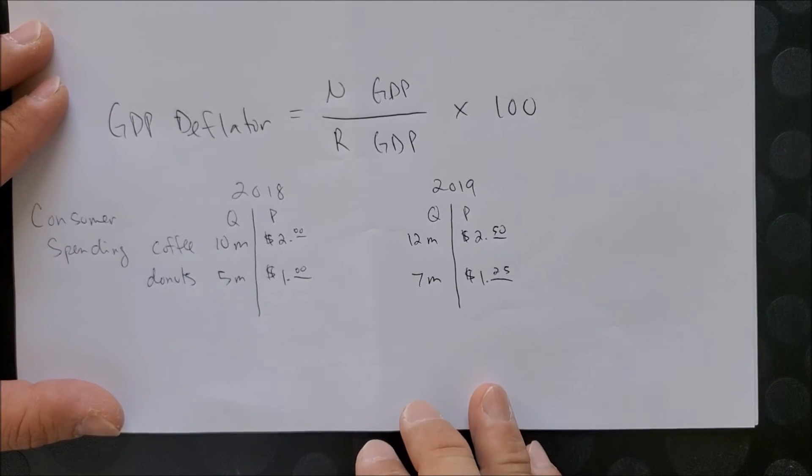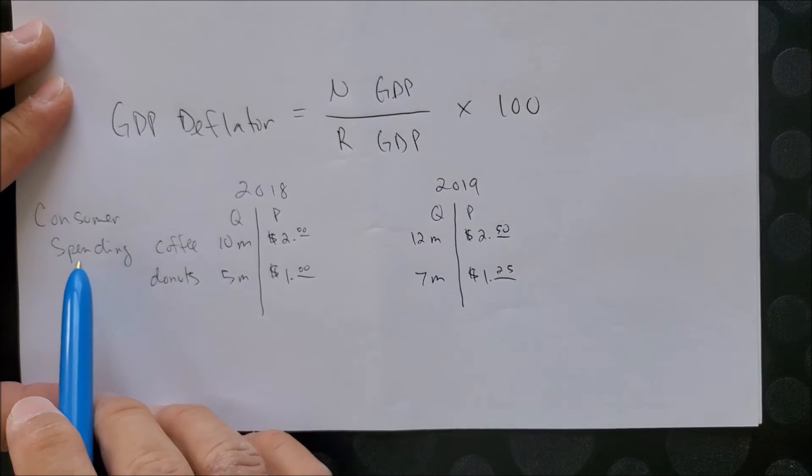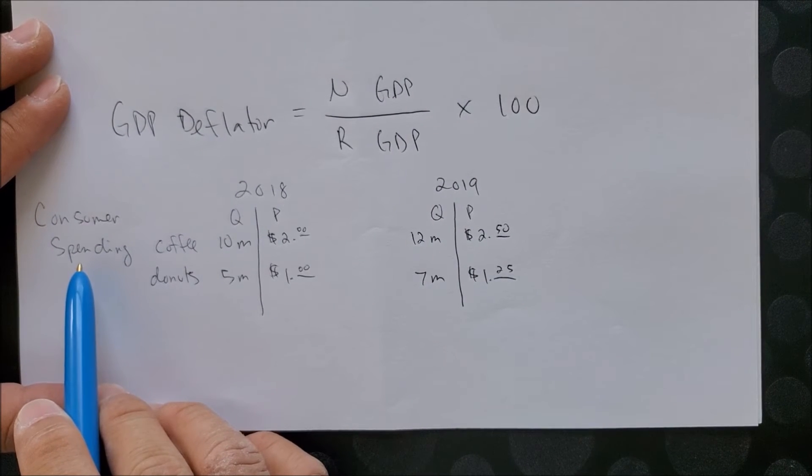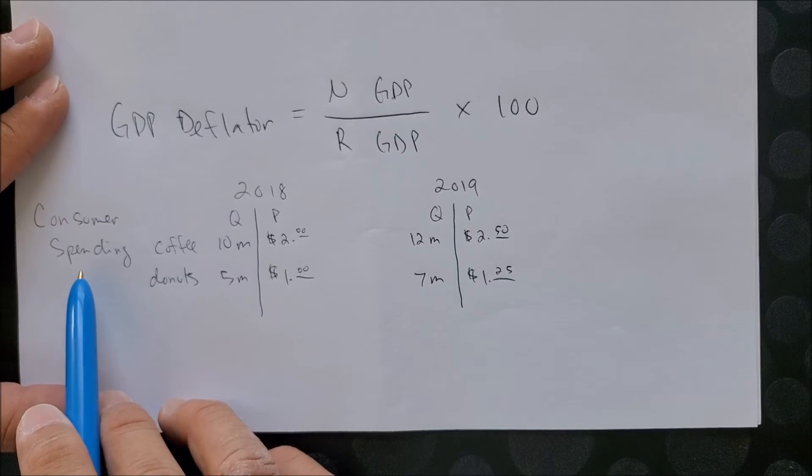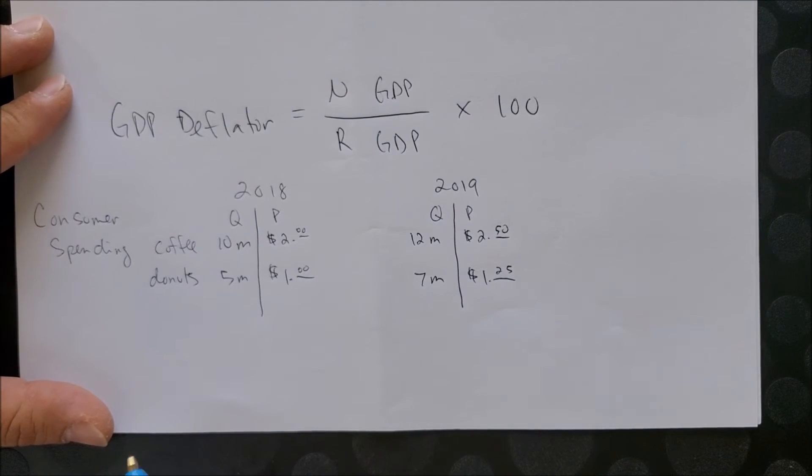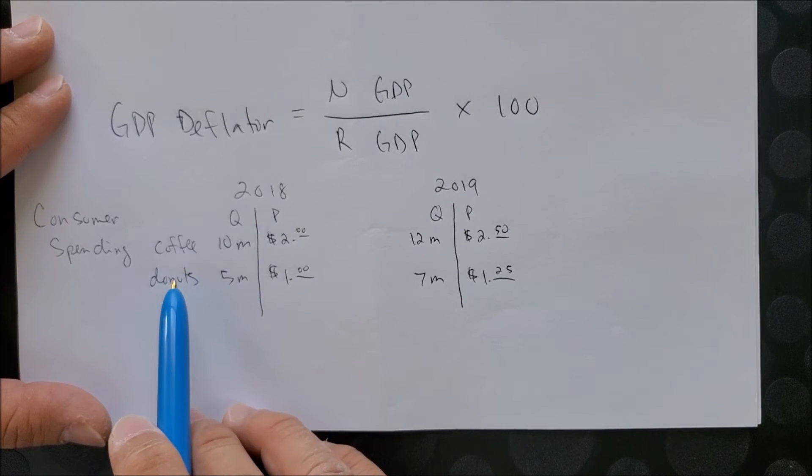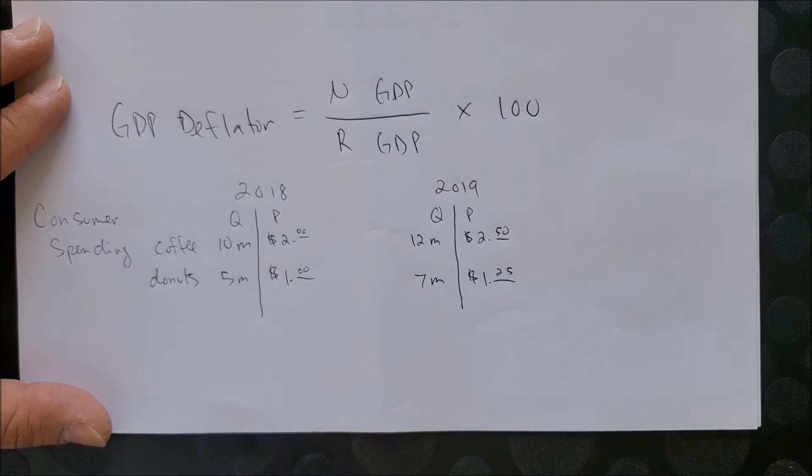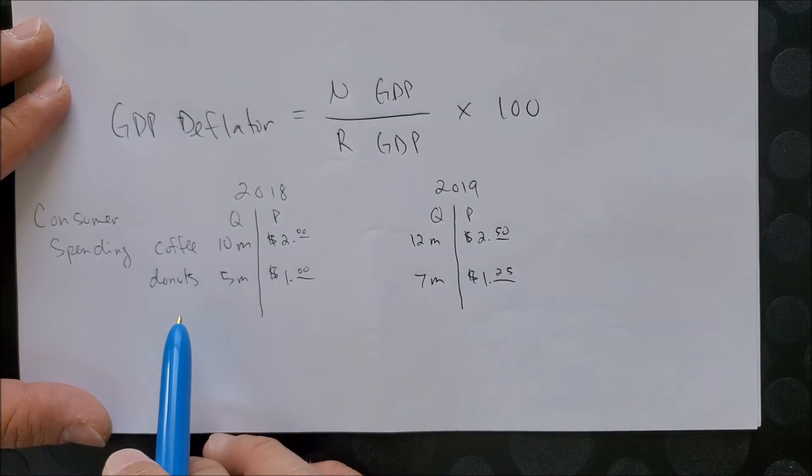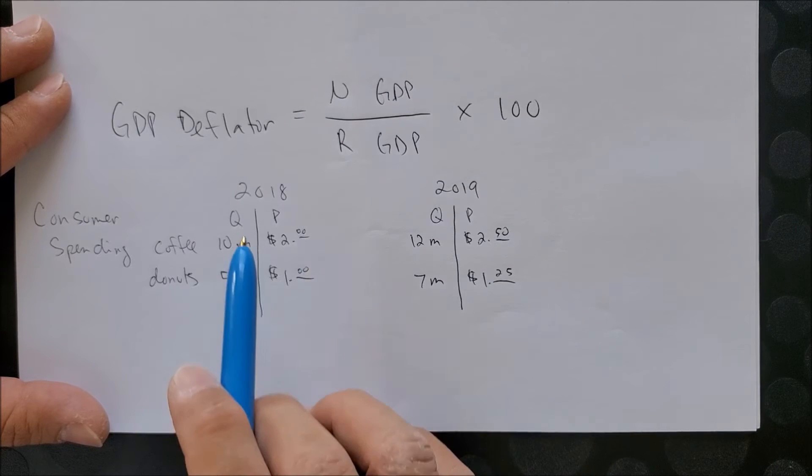What we have here is consumer spending, and we know that consumer spending accounts for the largest component of GDP, about 70 percent of GDP. Even though we have a lot more items to include, we're going to include two simple goods that consumers are going to consume in a yearly event: coffee and doughnuts.